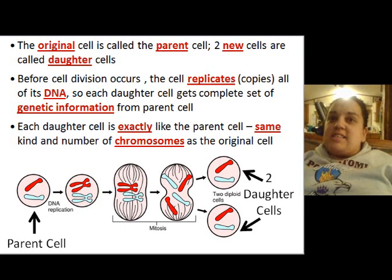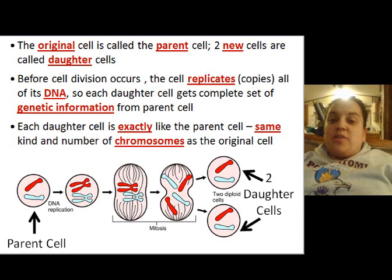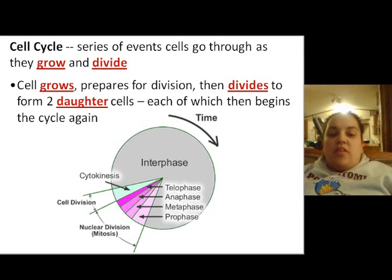The cell will know if there's a mutation and it will terminate it. So there's a lot of checks and balances, hopefully, within a healthy body. When the daughter cell is produced, it's going to be exactly like the parent cell — the same number of chromosomes. This is just a really, really amazing process.